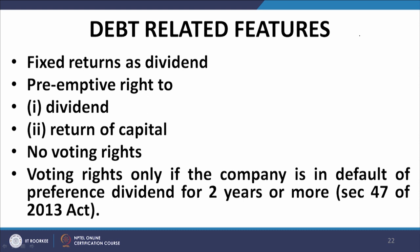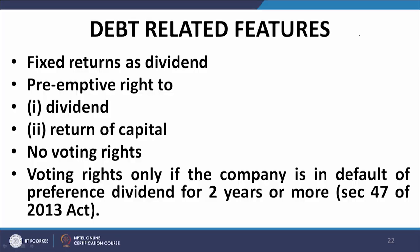Preferential holders have a preemptive right to dividend and return of capital. Under normal circumstances, preference shareholders do not have any voting right on resolutions tabled at shareholder meetings regarding the operations of the company. However, in certain special situations, voting rights are endowed on preference shareholders by the Companies Act 2013 — this is Section 47 — if the company is in default of preference dividend for two years or more.